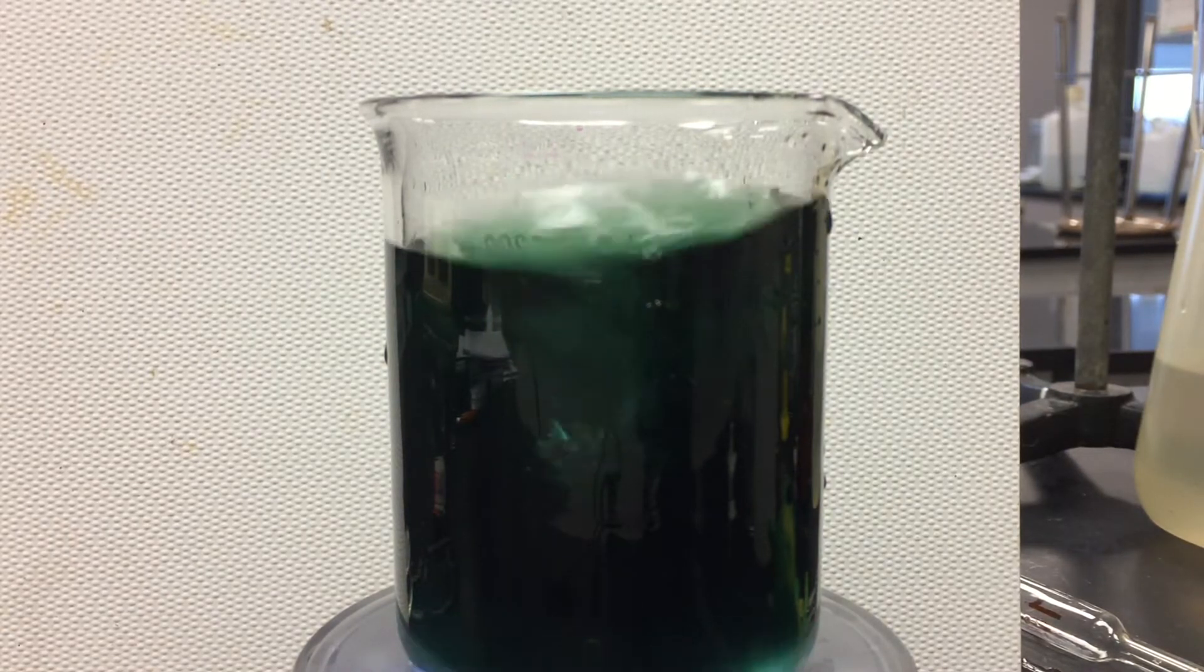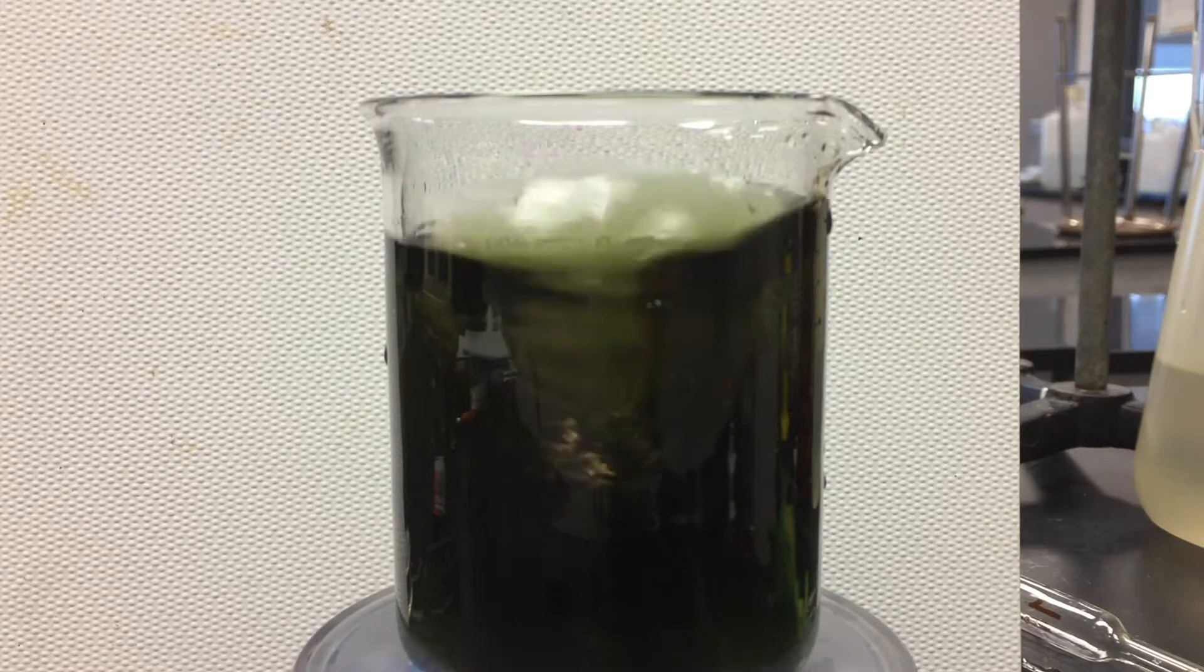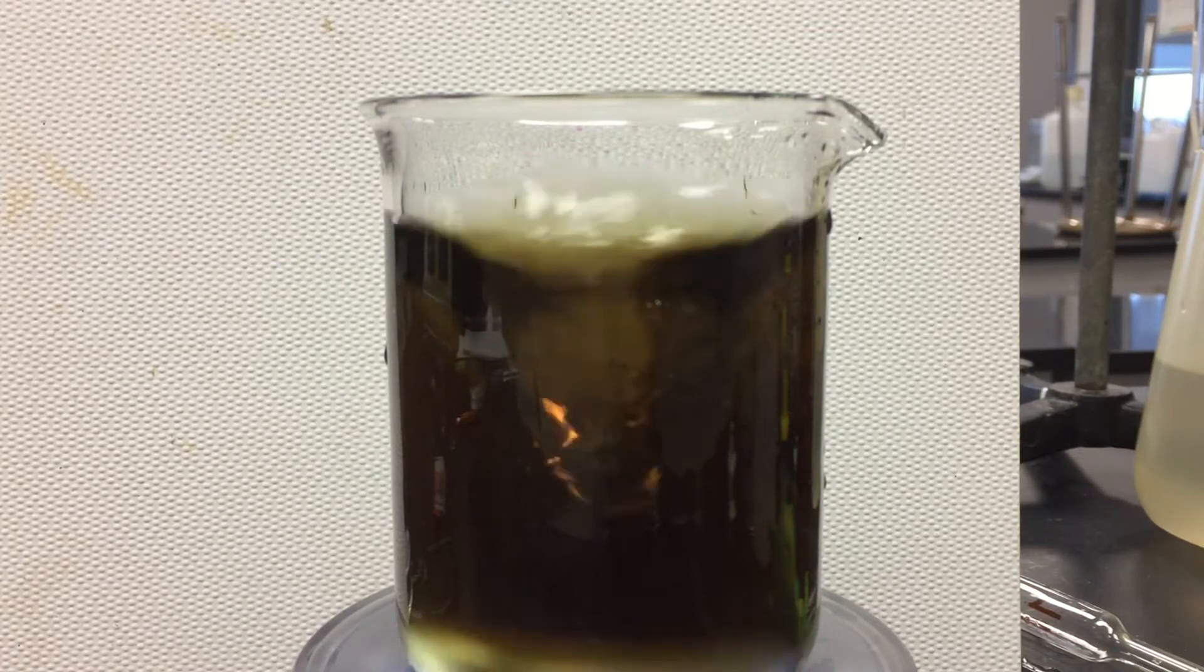Potassium permanganate has a violet color with an oxidation state of plus 7. Potassium manganate has a green color with an oxidation state of plus 6.